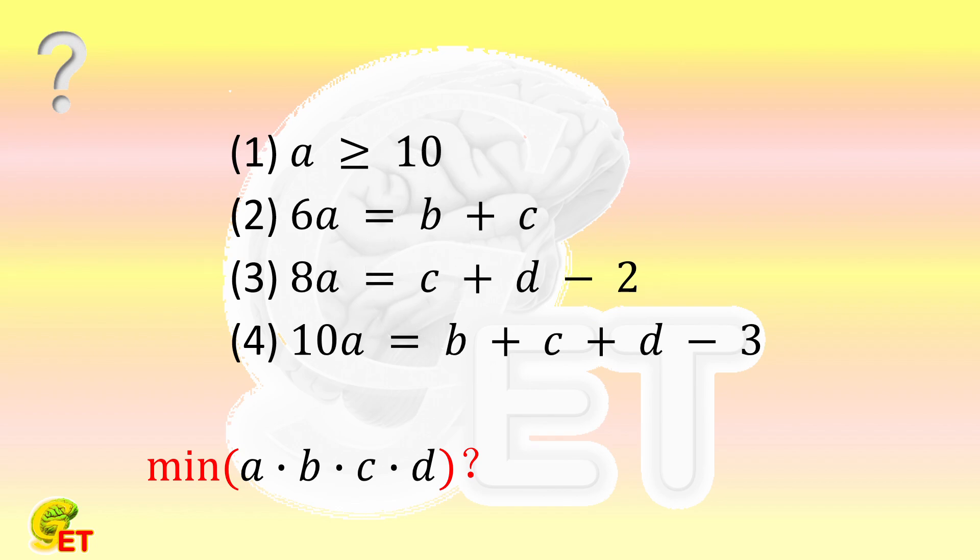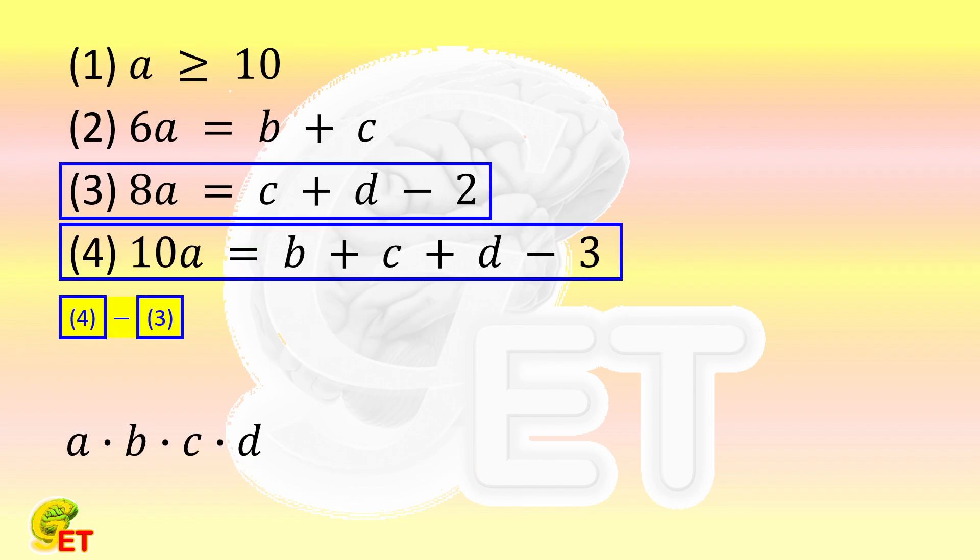The basic idea is simply to regard A as a known variable, and express B, C, and D by using it. We subtract the third equation from the fourth one to get that twice A equals B minus 1. So B is equal to twice A plus 1.